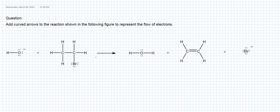In this tutorial we are going to solve a question related to reaction mechanisms. The question asks to add curved arrows to the reaction shown in the following figure to represent the flow of electrons.